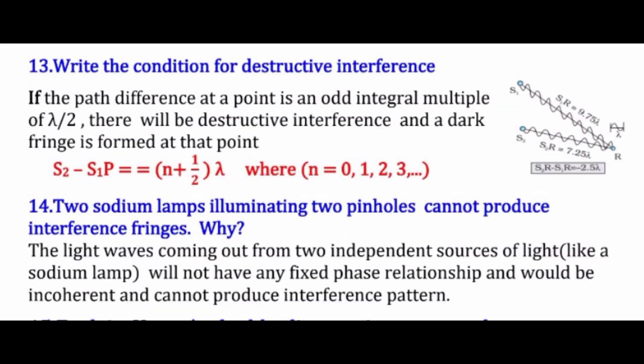The next question is: write the condition for destructive interference. In destructive interference the amplitude is minimum because the trough of one wave meets the crest of another and they cancel. The condition is that the path difference S₂P − S₁P must equal (n + ½)λ, which is an odd multiple of λ/2. A dark fringe is formed, and n = 0, 1, 2, 3...